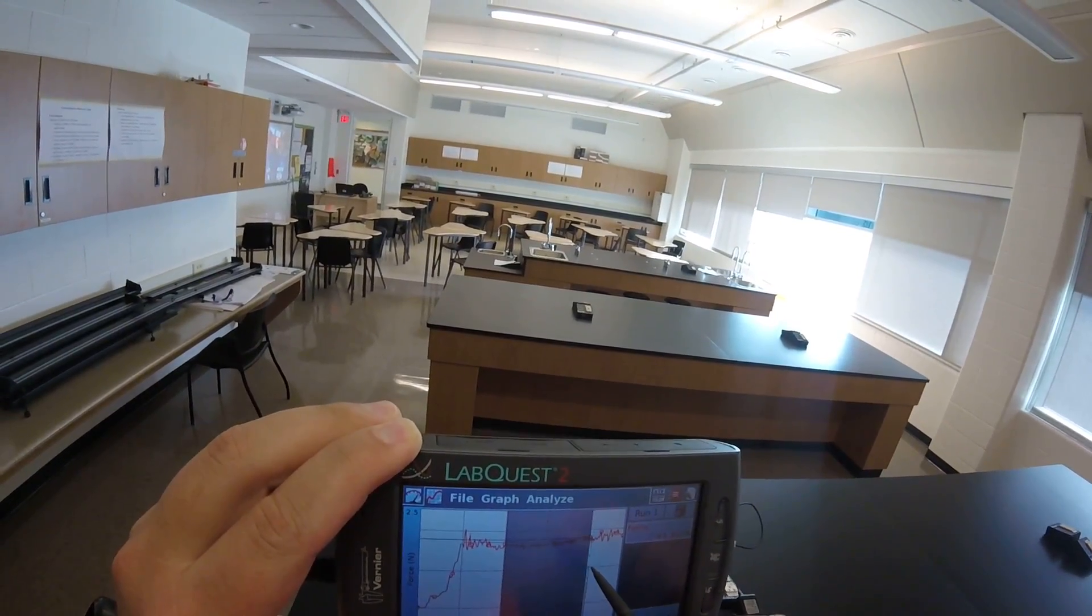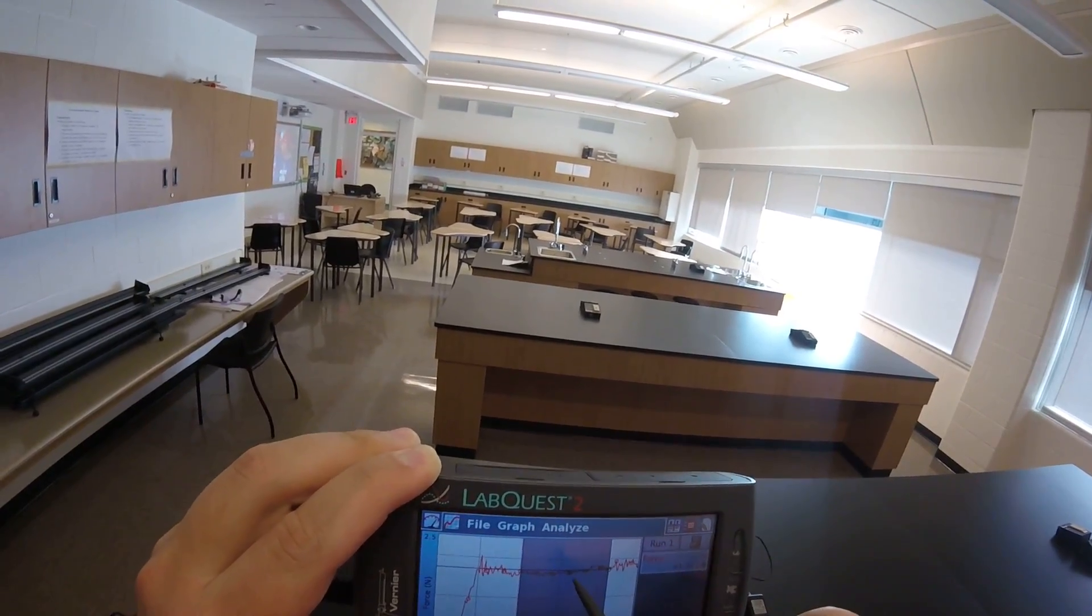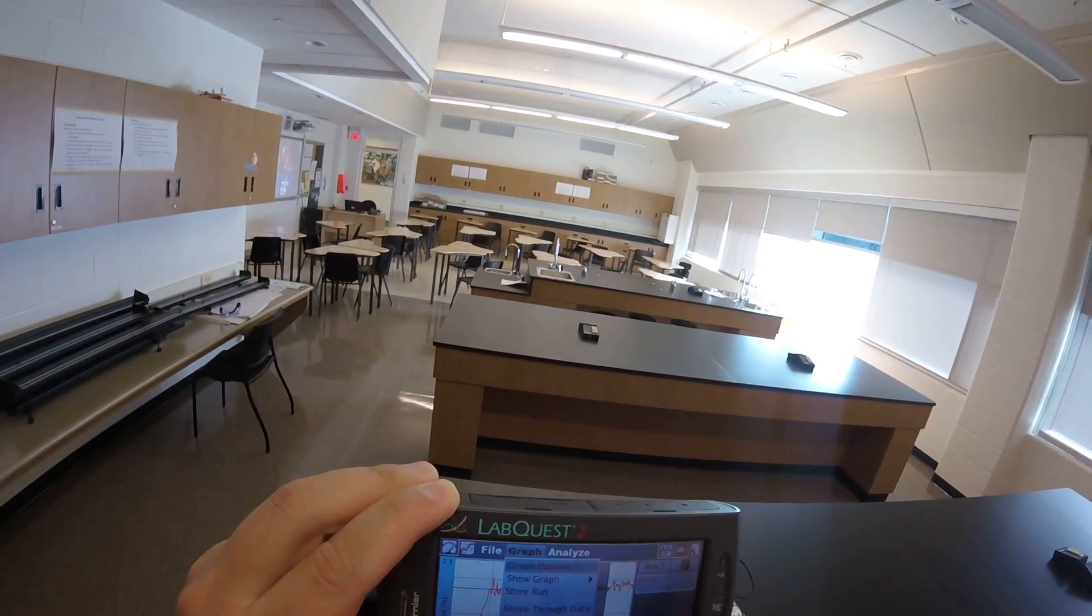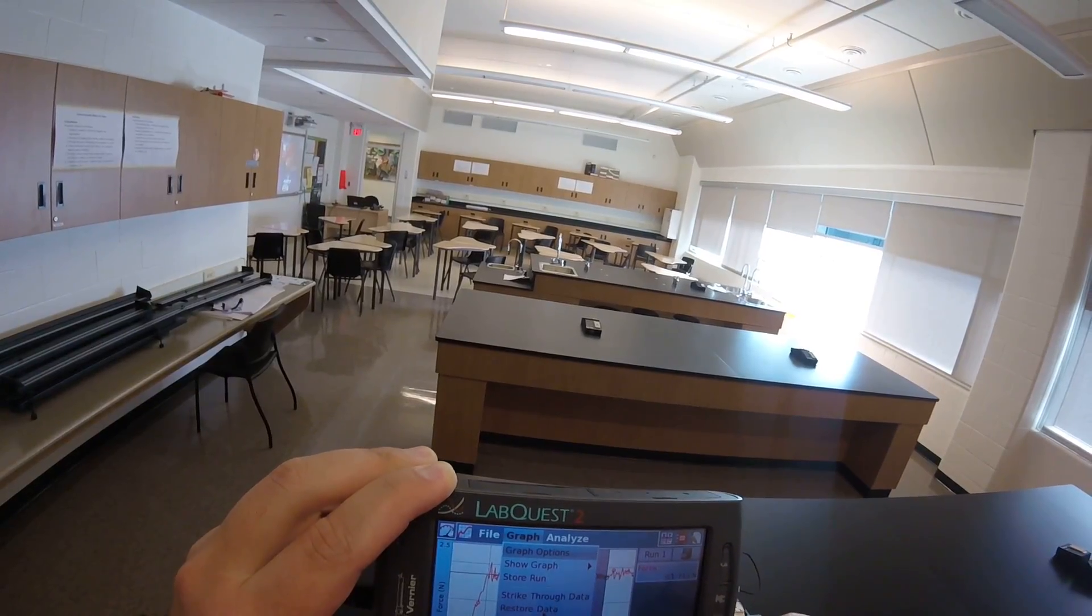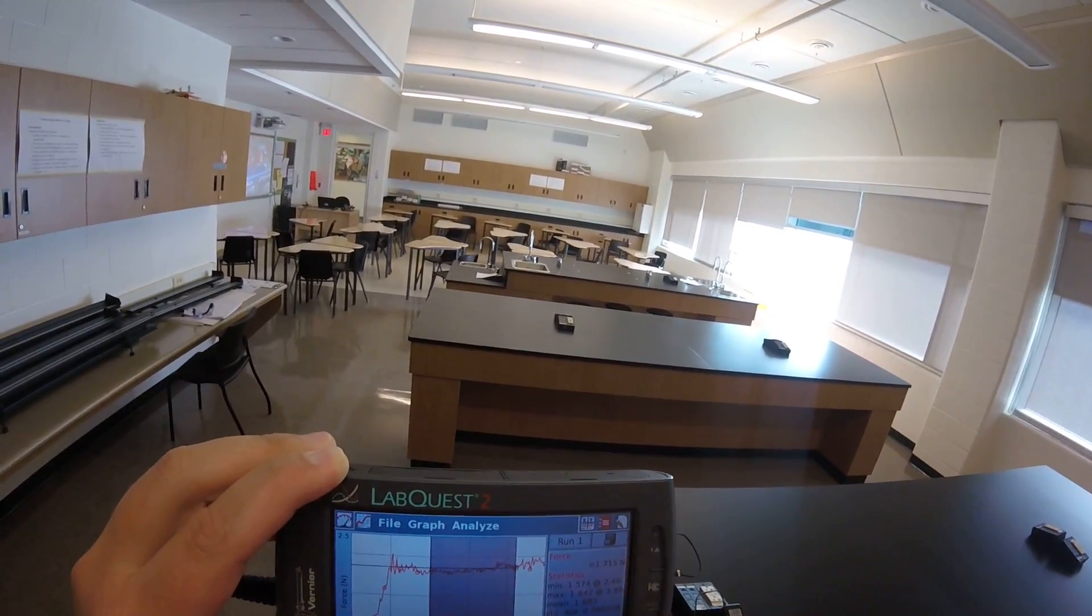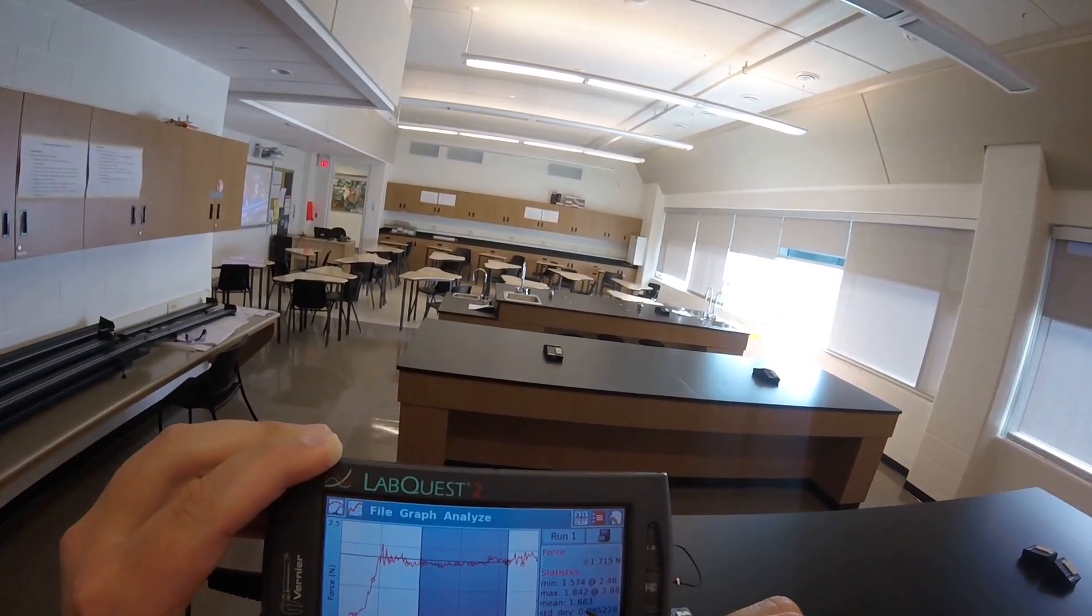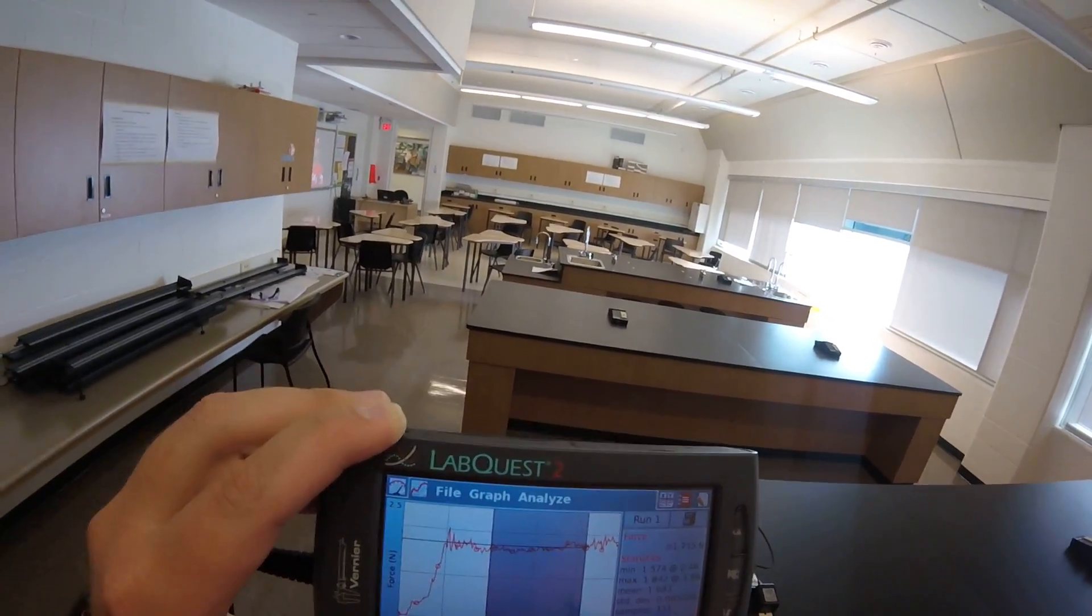So I can figure out the average force at which I was pulling at a constant speed, by highlighting that section, touching analyze, touching statistics, force, and see it says mean right here on the screen, 1.6683. That tells me my average force in that section.